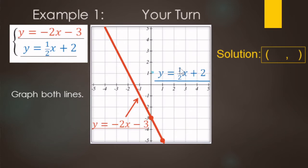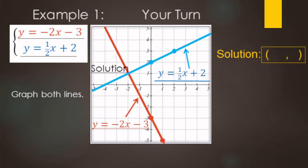For the blue equation, the y-intercept is positive 2, and the slope is one-half — up one, right two. Draw that line. The point that makes both equations true is where they intersect — negative 2 for x and 1 for y. The ordered pair that makes both equations true is negative two comma one.